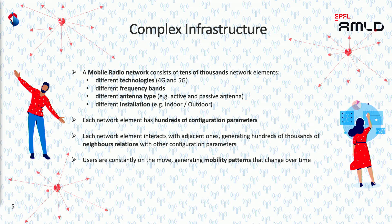Each network element, each cell, has hundreds of configuration parameters, and each cell interacts with its neighbor ones, generating hundreds of thousands of relations. Each relation has another parameter to be configured. On top of that, the users of a mobile network are constantly on the move, generating mobility patterns that change over time.